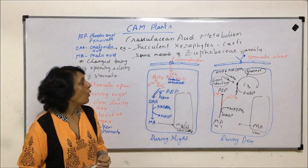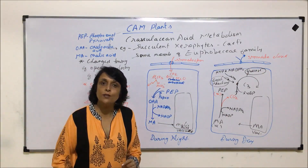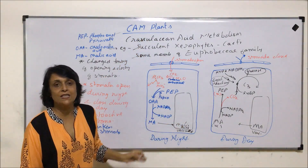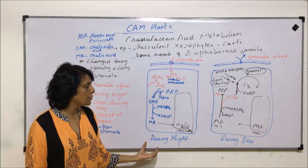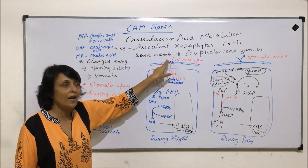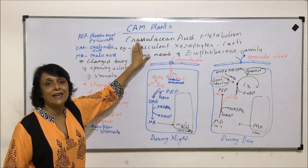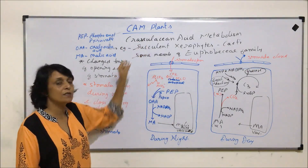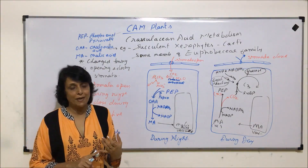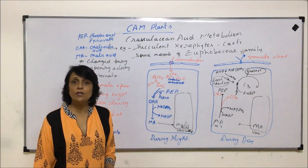By changing the time of opening and closing of stomata, these plants have shown a slightly different method of photosynthesis — these are called CAM plants, and this is known as CAM plant photosynthesis. The most common examples are succulent xerophytes like Opuntia, some members of the Euphorbiaceae family, and plants belonging to the Crassulaceae family — which is why this metabolism has been given that name. So whether it is regular C3 plants, C4 plants, or CAM plants, by showing different modifications and adaptations, the process of photosynthesis takes place and glucose is synthesized.